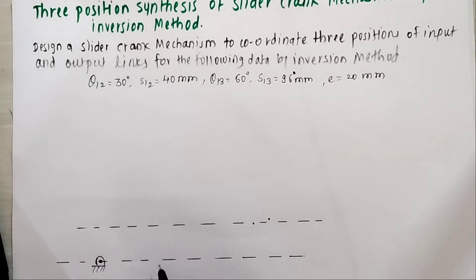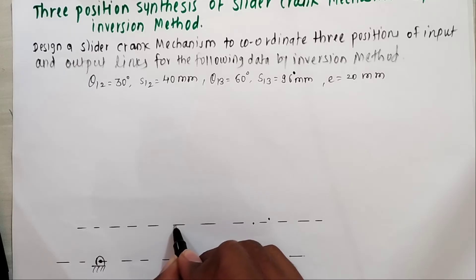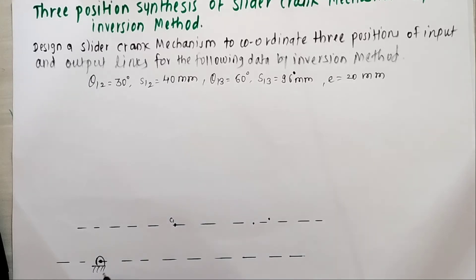Now similarly I need to select point C anywhere on this path of slider. This is first position of slider called C1. So I have considered points A1 and C1 on these both lines.